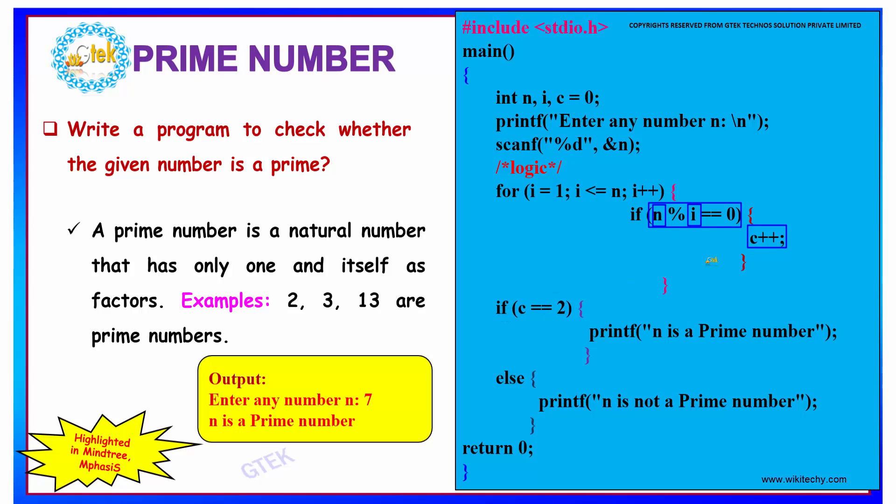Finally, when c comes out of the for loop, if its value is 2—because 1 and itself is the condition for a number to be prime—then the number is a prime number.